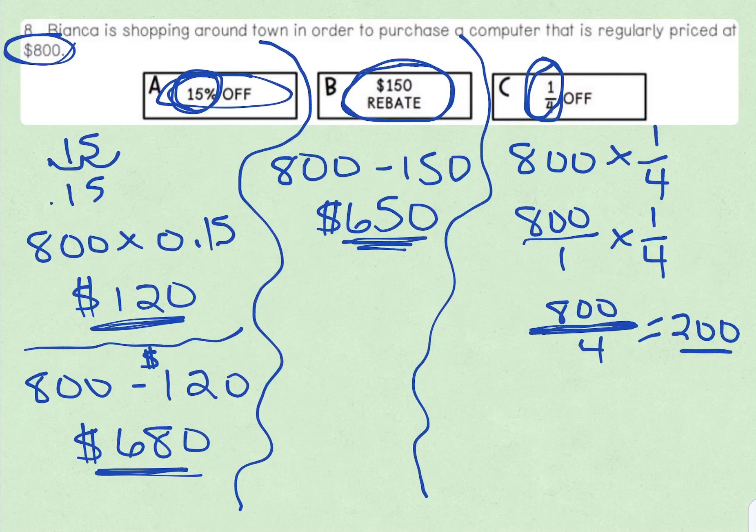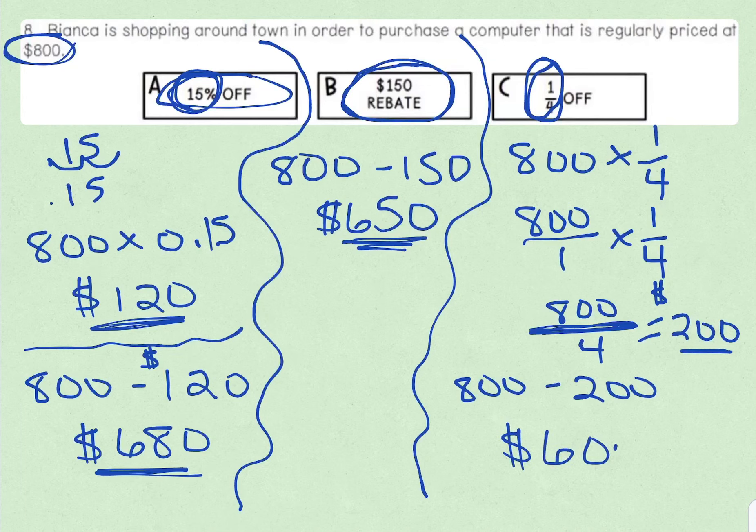So here we have our discount amount, $200. And so when we take a fourth off the price, what is the sale price? So now we take our 800, and we subtract the 200 to get the sale price of $600.